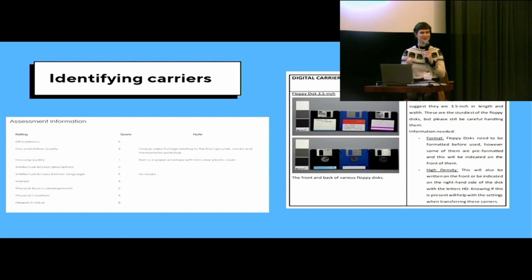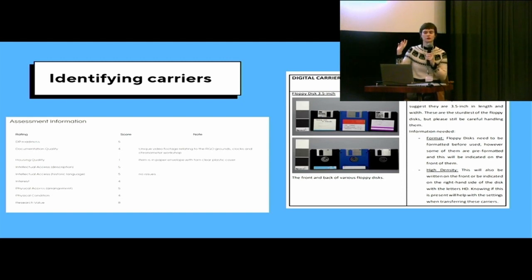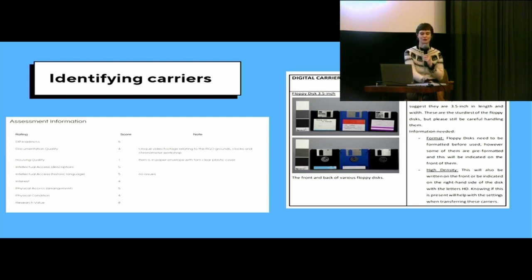This is an example — on the left hand side you can see an assessment record within ArchivesSpace where we asked them for a bit more detail. We asked them, if they have any idea, to give us an idea of what's on that specific carrier. On the right, you can see part of our identifying digital carriers guidance — this one specifically is about three and a half inch floppy disks. We write down what we want them to put in these notes, for example whether it's a double density or high density floppy disk. It's been really helpful and all the staff have been really good at making these notes, which makes our job a lot easier.